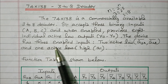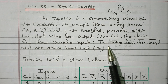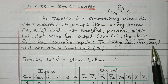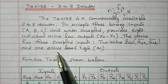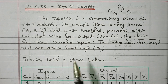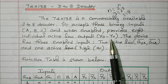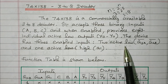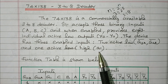The device has 3 enable inputs. In that, 2 are active-low: G2A bar and G2B bar. And one is active-high: G1. So we have 3 inputs A, B, C; 8 outputs Y0 to Y7, which are active-low outputs because of inverted output; and 3 enable inputs — 2 are active-low, one is active-high.